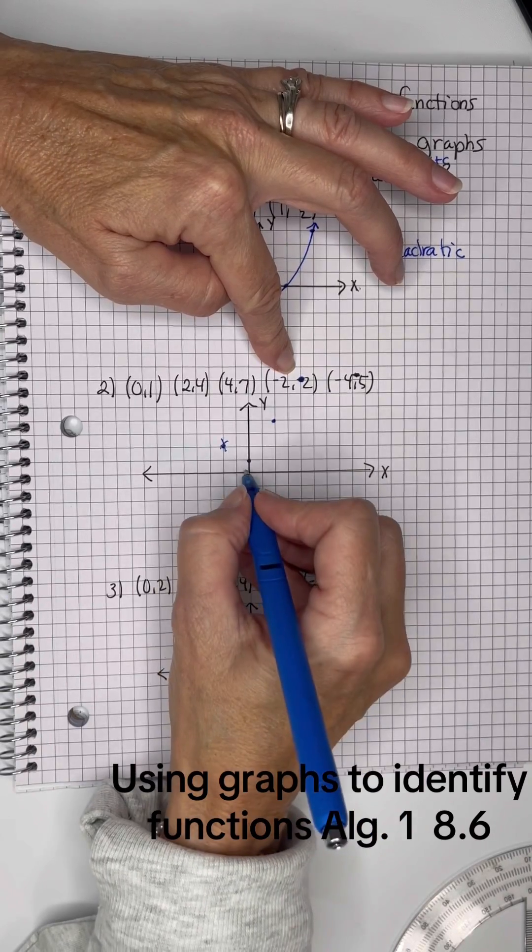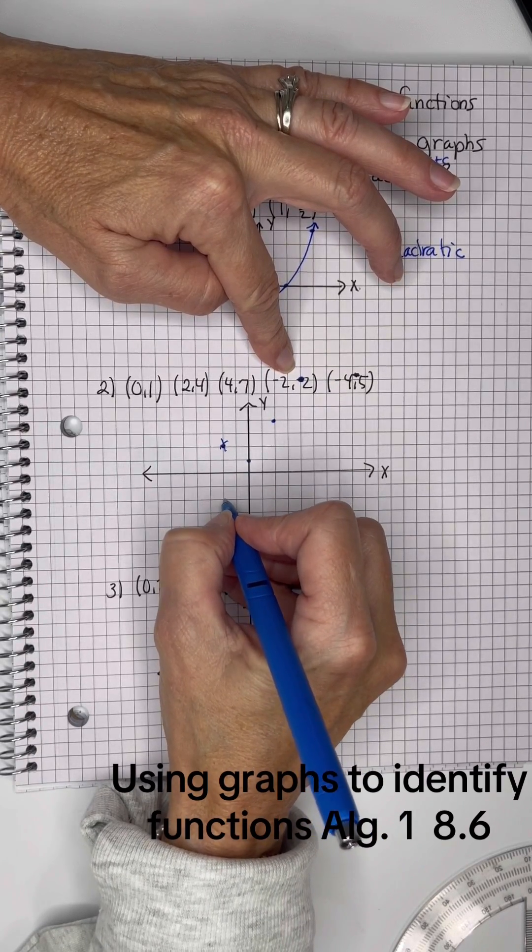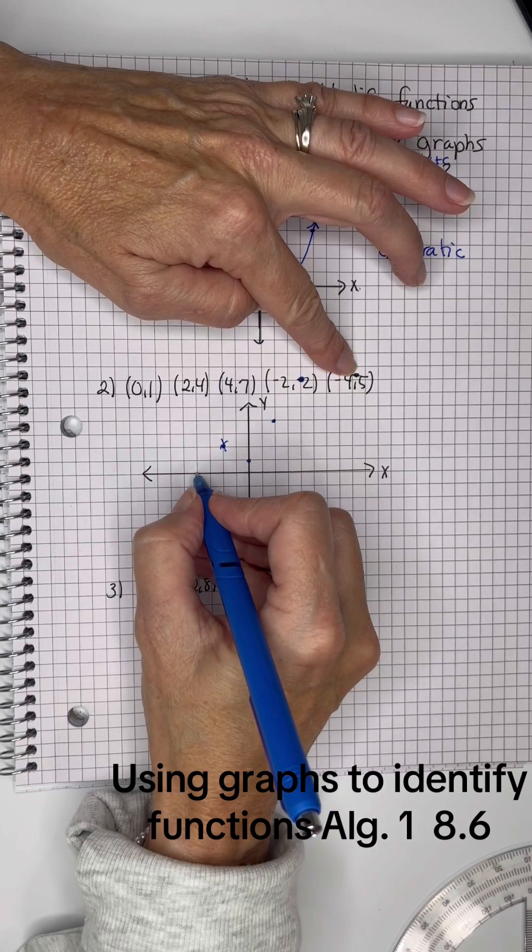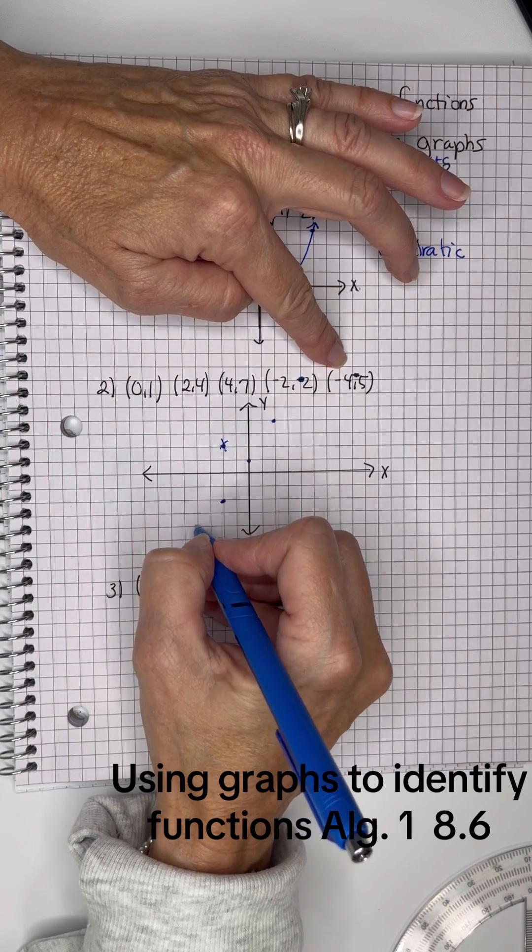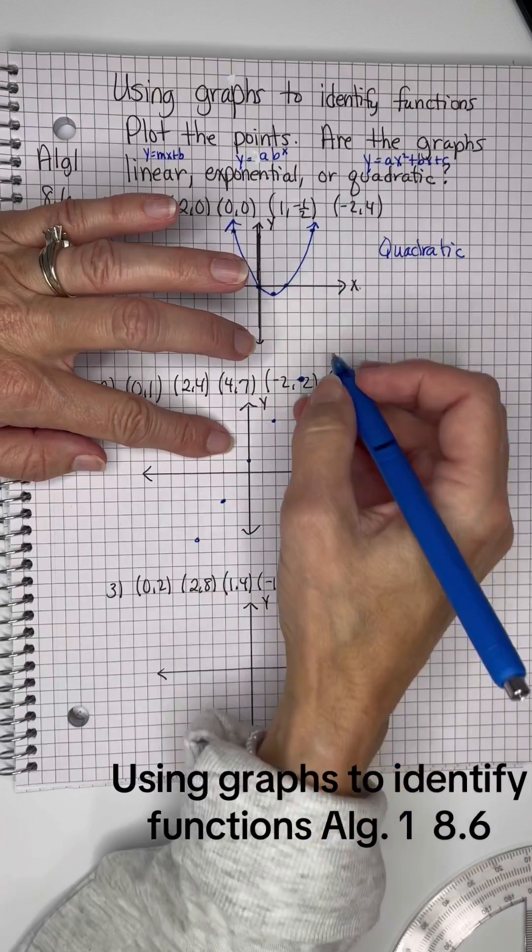Negative 2, negative 2, that one is wrong right there. So negative 2, negative 2, and then negative 4, negative 5. Okay, ignoring that one because it was a mistake.